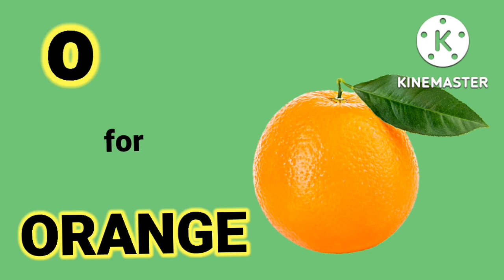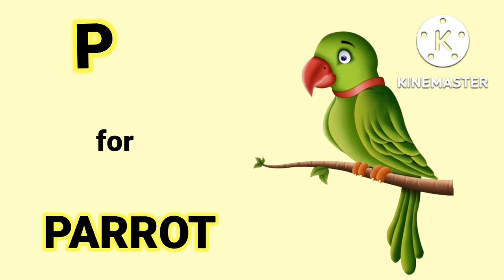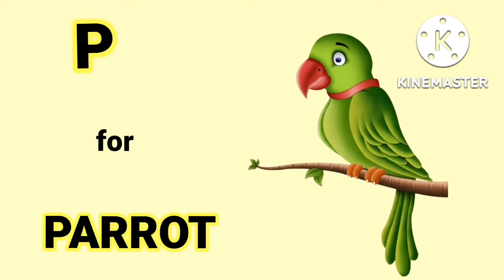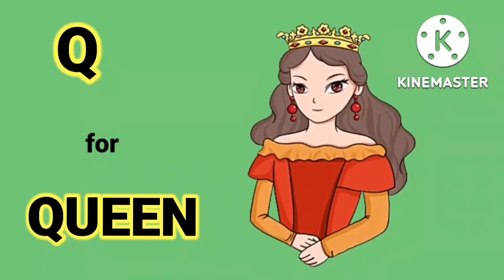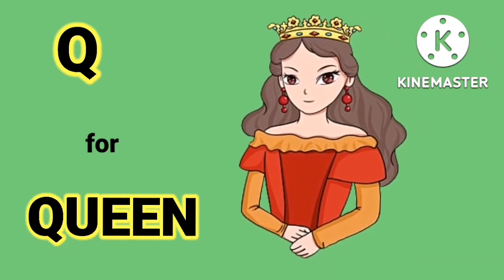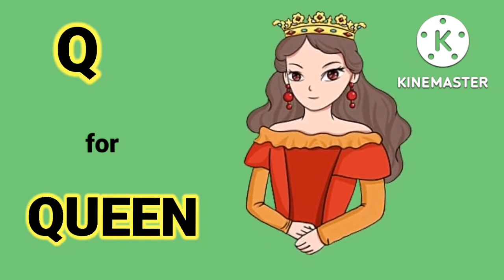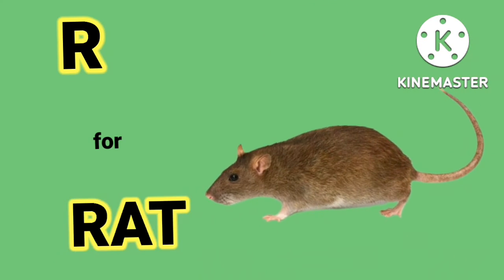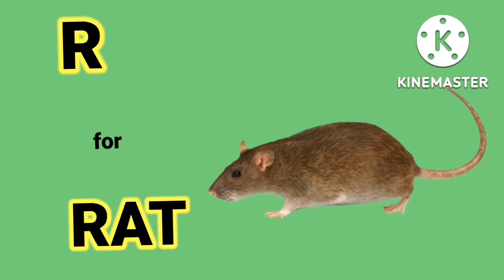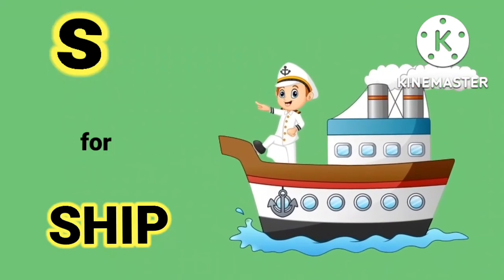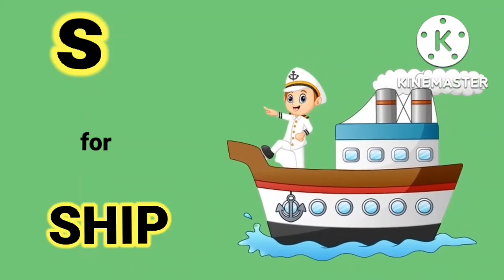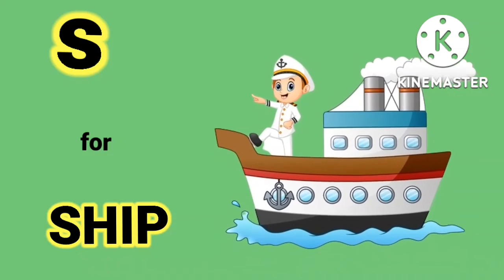O for orange, orange means centra. P for parrot, parrot means toota. Q for queen, queen means rani. R for rat, rat means chuha. S for ship, ship means jahad.